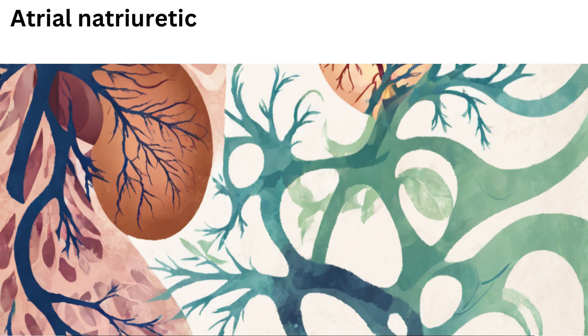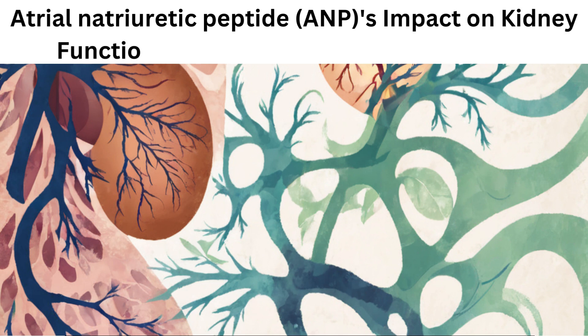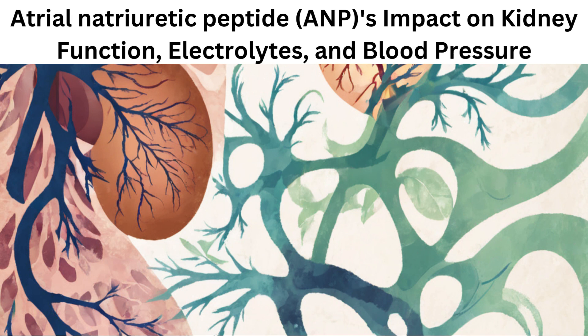Hello Whizzes! Welcome to my channel. Today's topic is Atrial Natriuretic Peptide, ANP, its impact on kidney function, electrolytes, and blood pressure. Atrial Natriuretic Peptide, ANP, is a hormone primarily produced and released by the atria of the heart in response to increased blood volume and stretching of the atrial walls. ANP plays a crucial role in the regulation of renal function, electrolyte balance, and blood pressure in the human body.